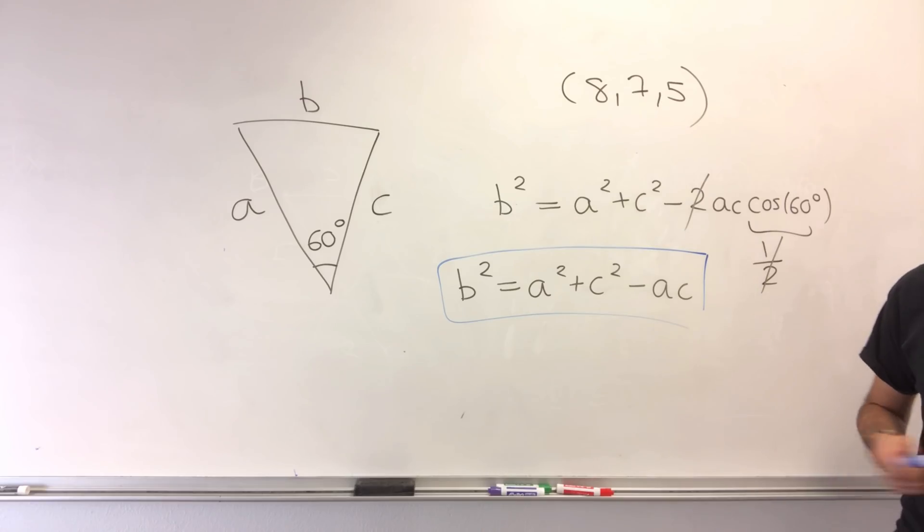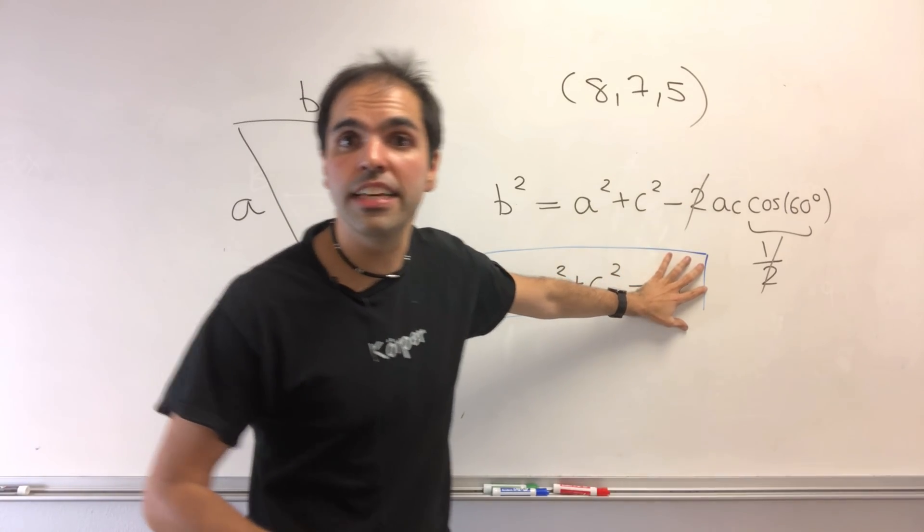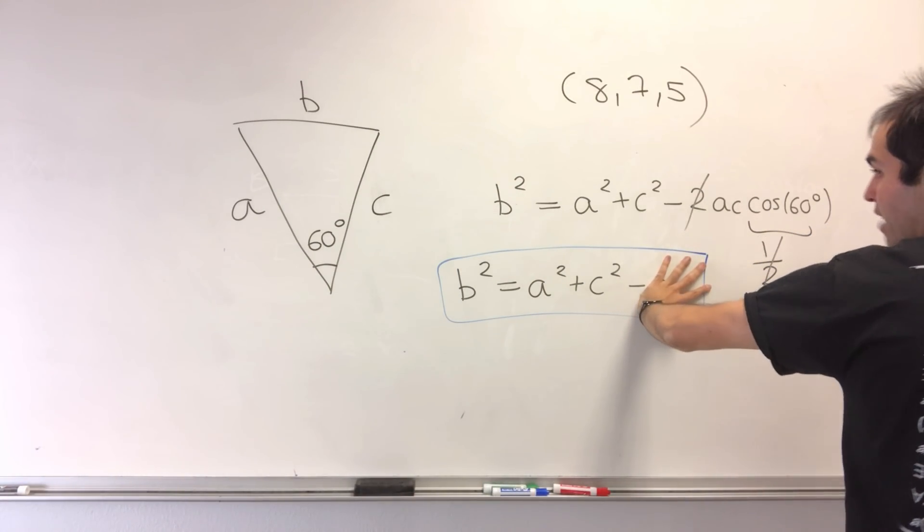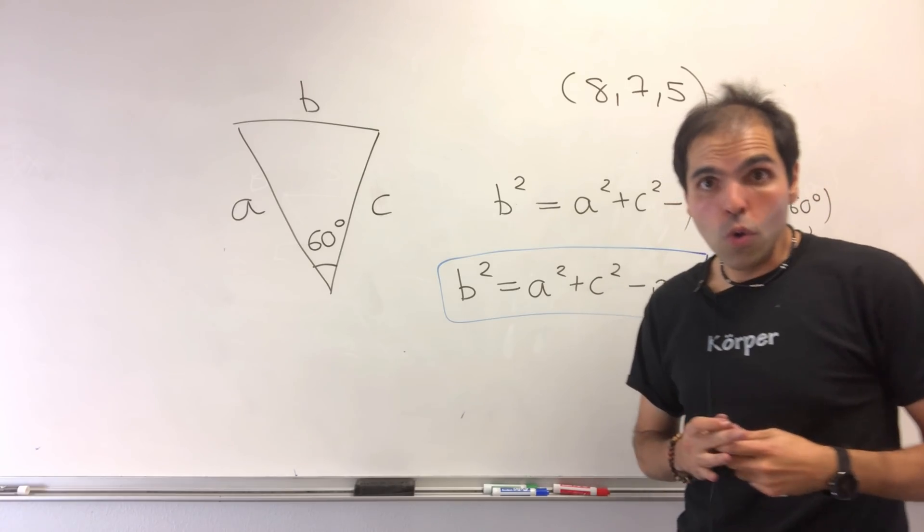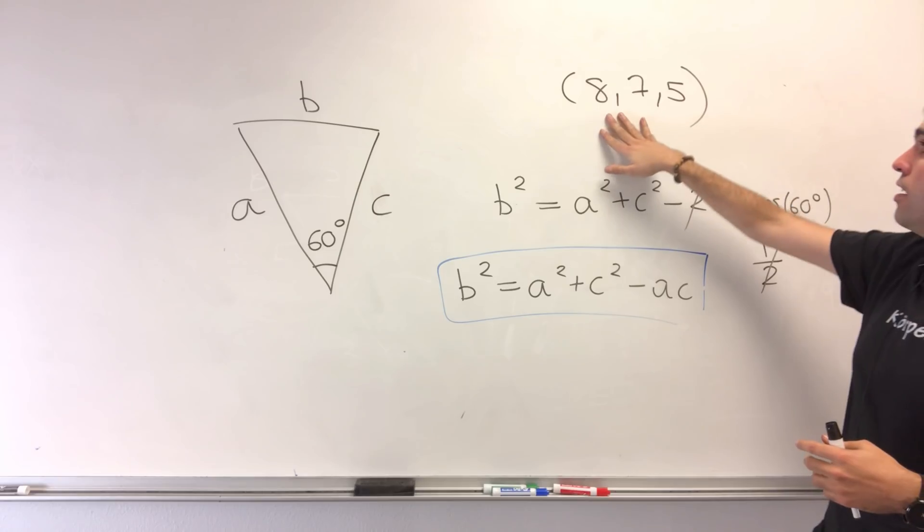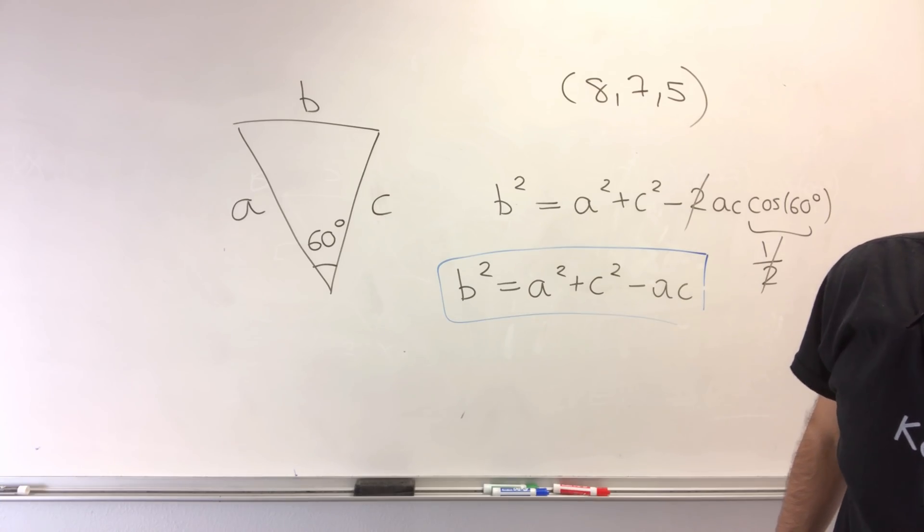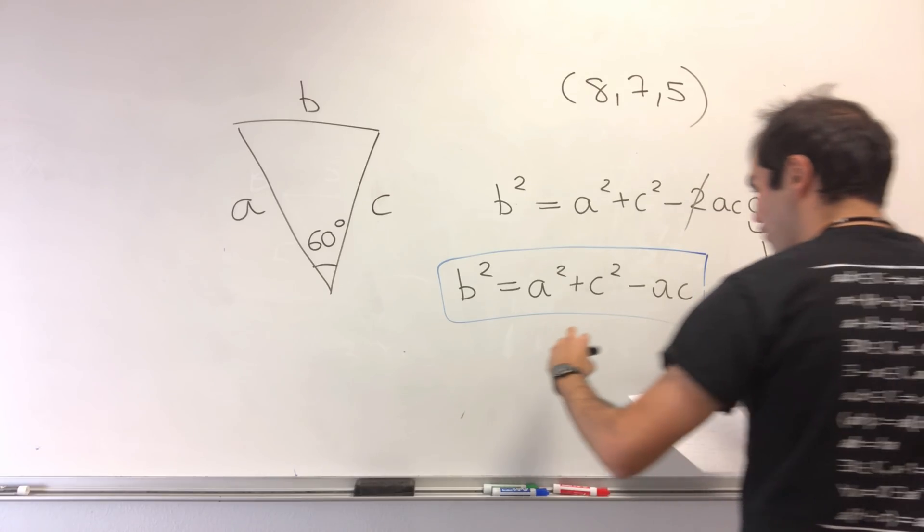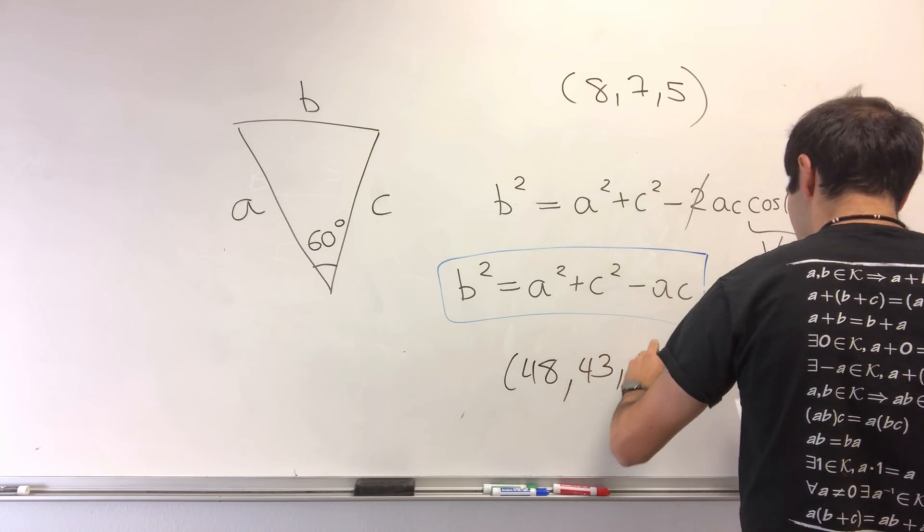I like to call this an anti-Pythagorean identity, because if the ac term were zero, we would get the Pythagorean theorem. The cool thing is, not only does (8,7,5) satisfy this, but there are also other cool triangles, like (48, 43, 13).